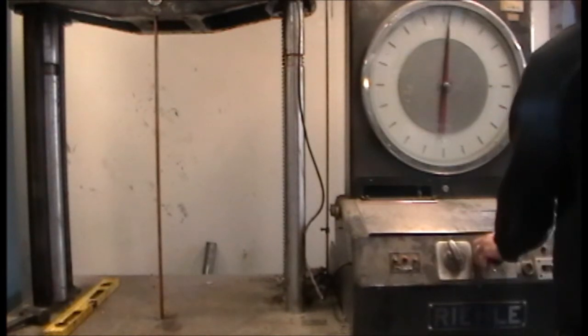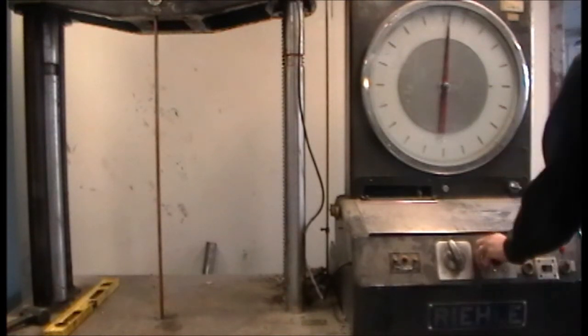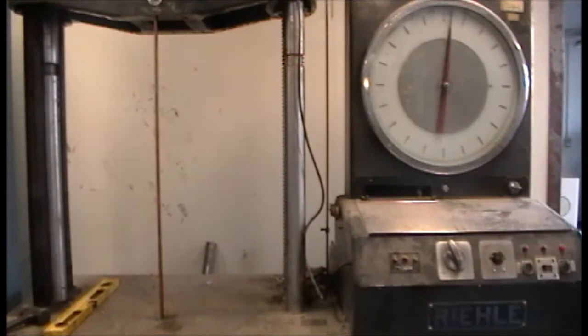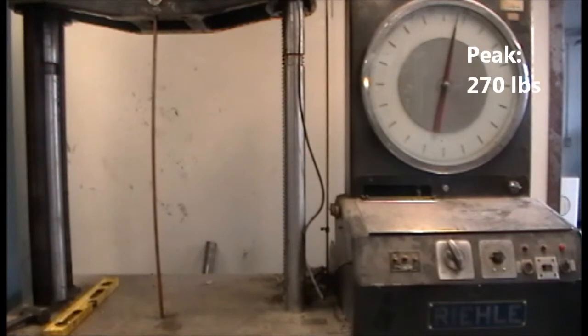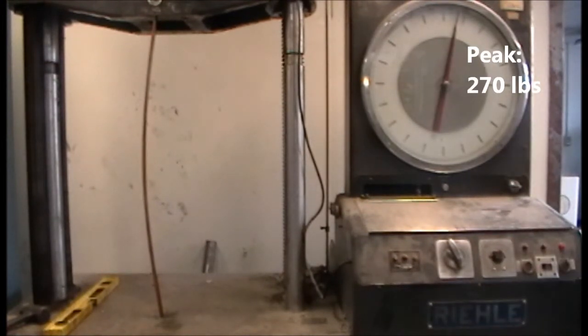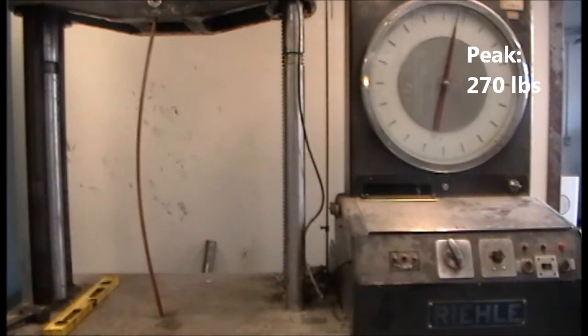First, a basic pin-ended column test was conducted on a member that appeared to be initially straight. But of course, we understand that even those members that appear initially straight must have some degree of crookedness. The column failed by mode 1 buckling at a load of 270 pounds.